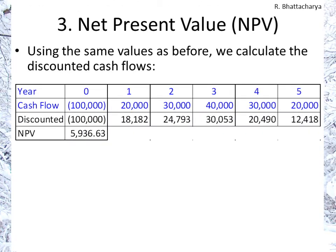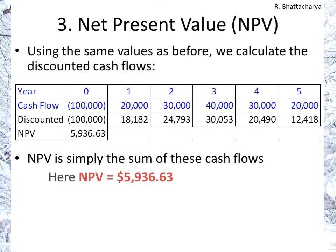Using the numbers we already have, with a cash outflow of $100,000 and the remaining cash flows for the five years coming in, the discount rate gives us a net present value of $5,936. That means the cash inflows from years one to five must be adding up to $5,936 more than the cash outflow at time zero of $100,000. So here we would accept the project.